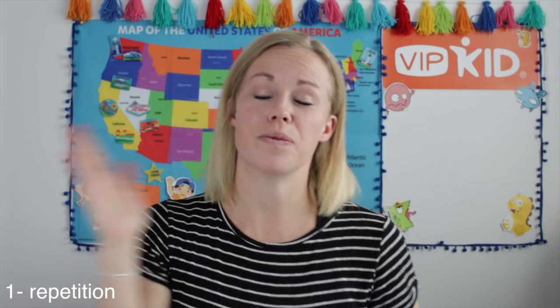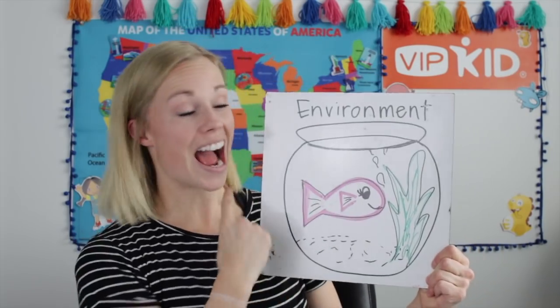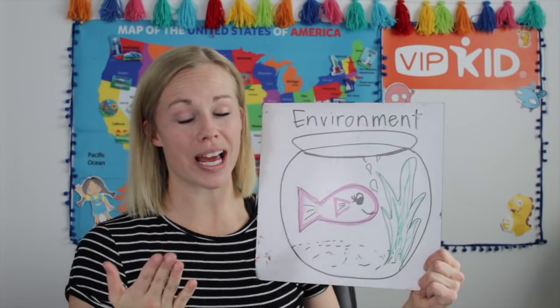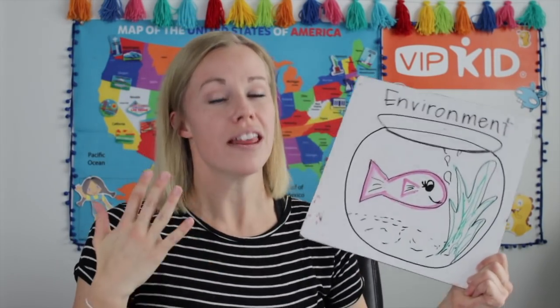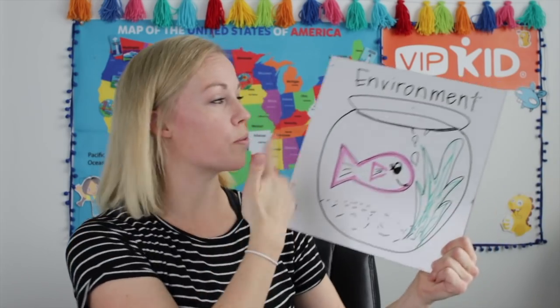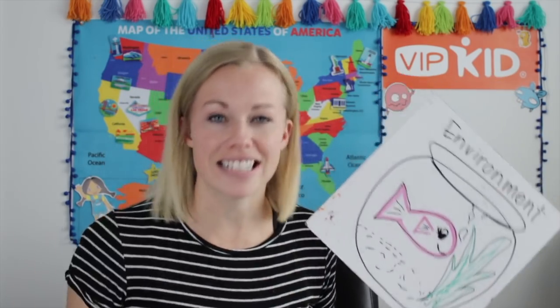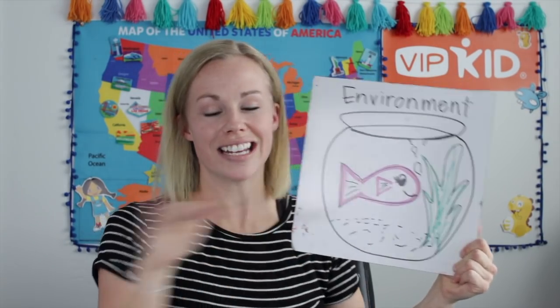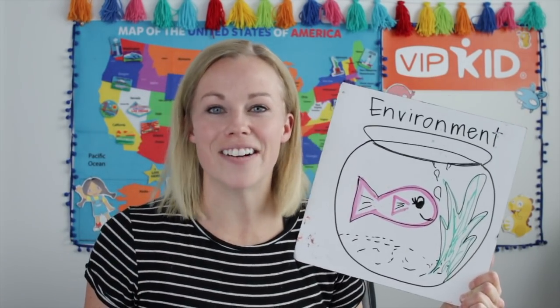Number one, the first thing is we need repetition. With younger students it's very key to hit that repetition, and with older students as well. For example, if I'm teaching "environment," I say it first and I want to say it at least two times or more, depending on how the child responds. If they already know the word up front, I'm obviously going to move past that and ask an extension question. I'm not just going to teach it exactly how I practice if the student already has it down — that would just be a waste of their time and my instruction.